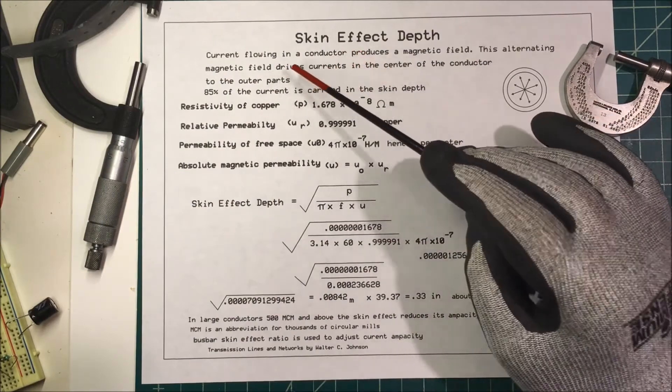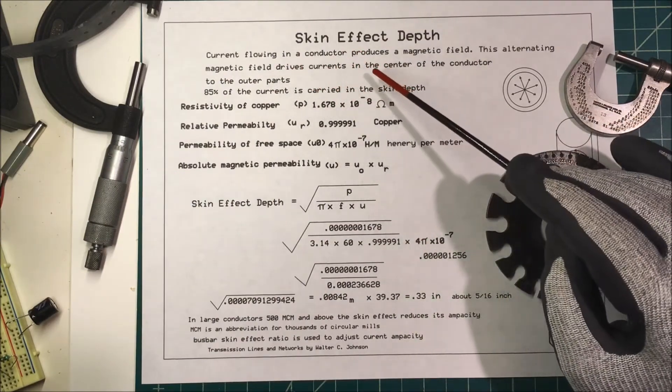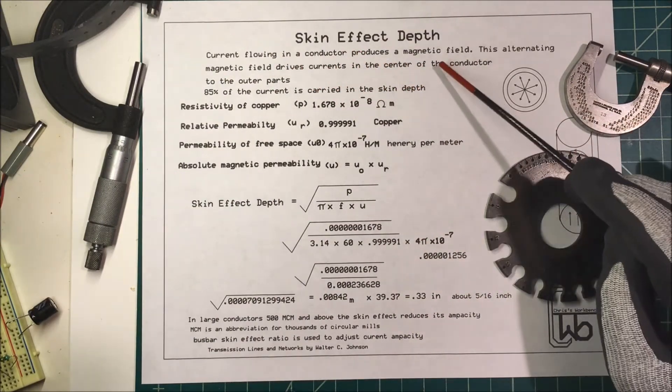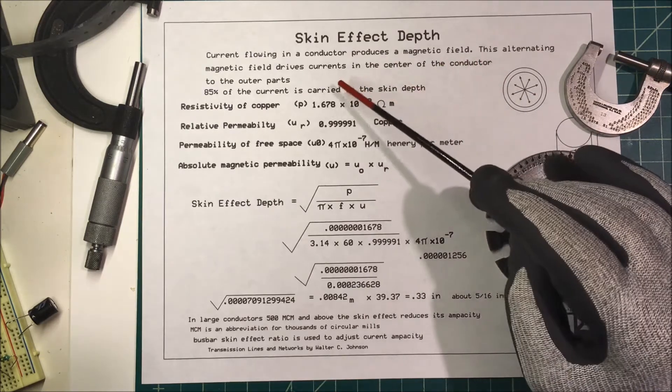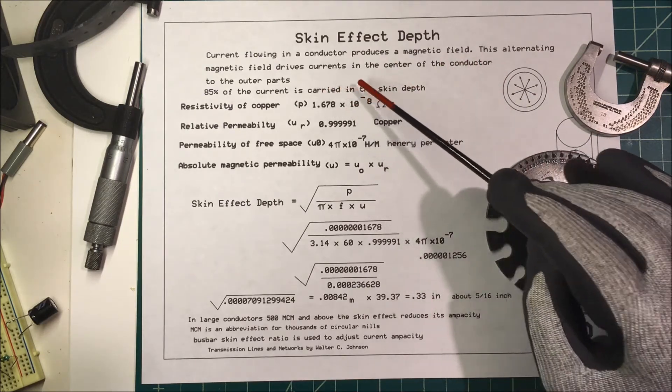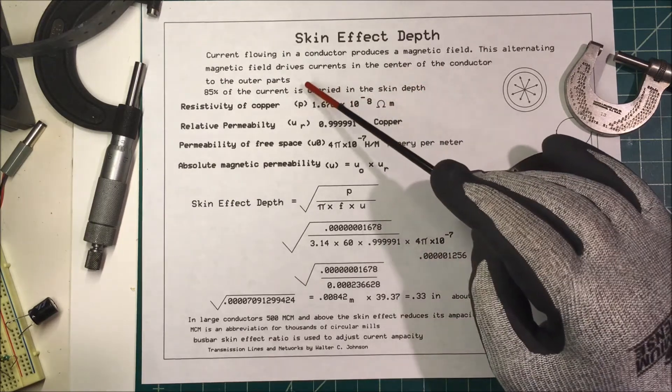Let's talk about skin effect. When alternating current flows in a conductor, it produces a magnetic field. This alternating magnetic field produces eddy currents that drive the current in the center of the conductor to the outer parts.